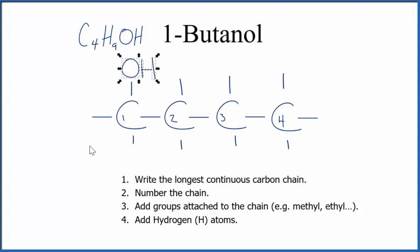This is the formula for 1-butanol: the chemical formula C4H9OH, and the structural formula shows four carbons with the OH group on the first carbon.